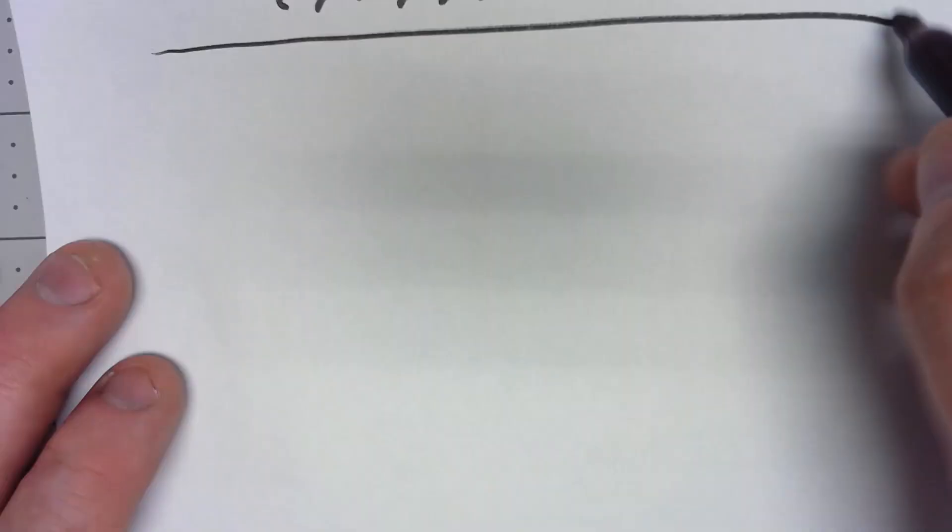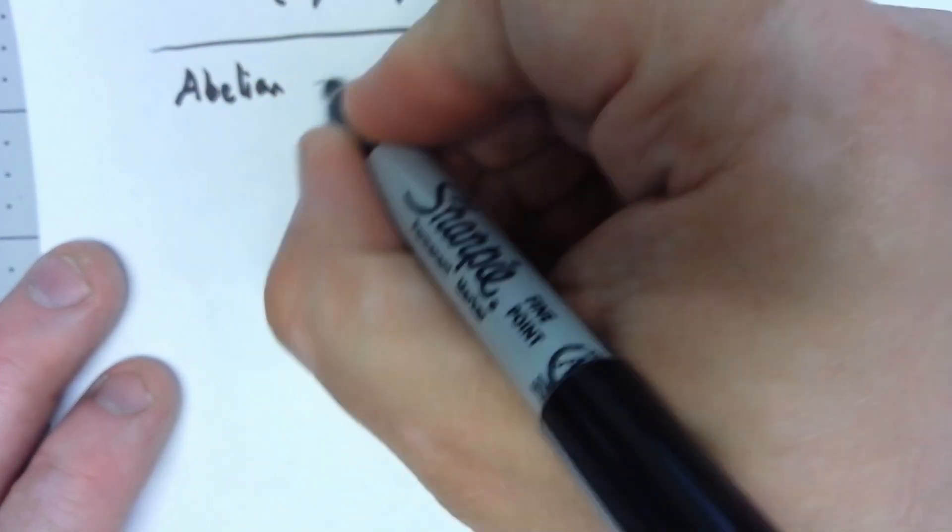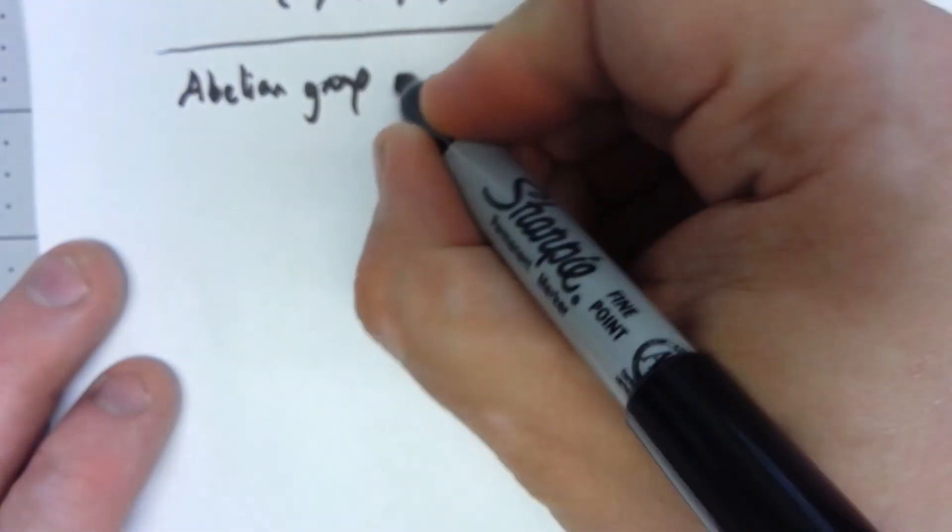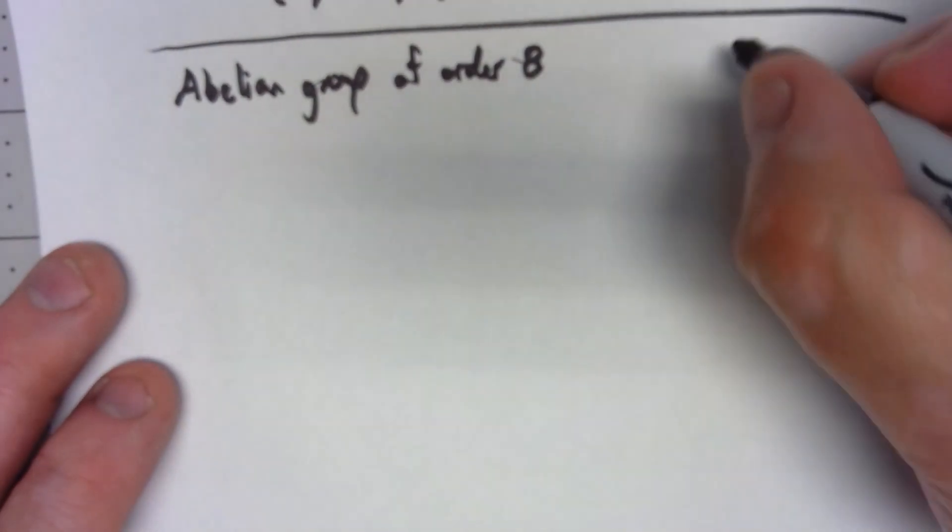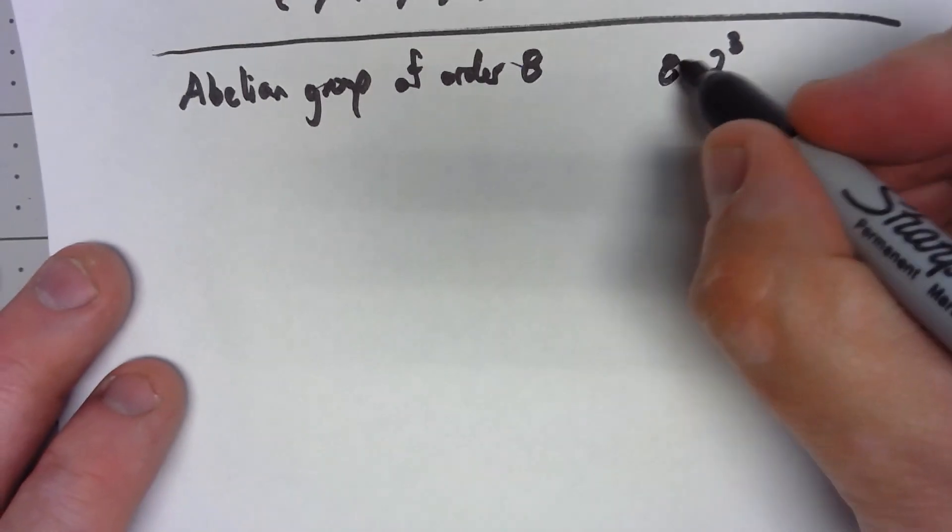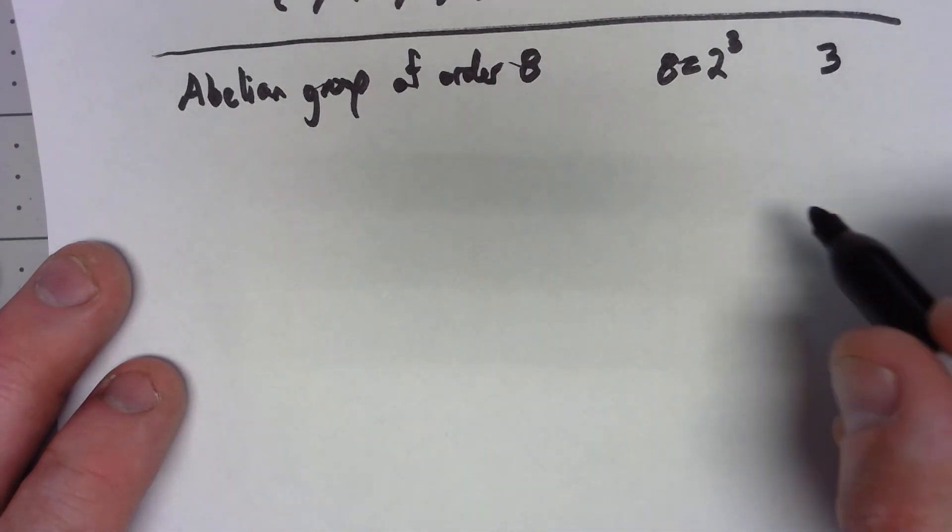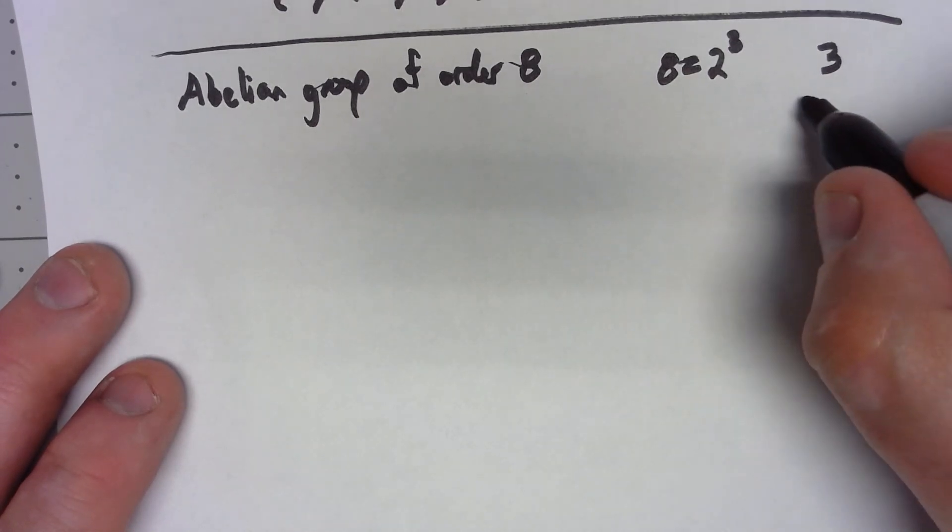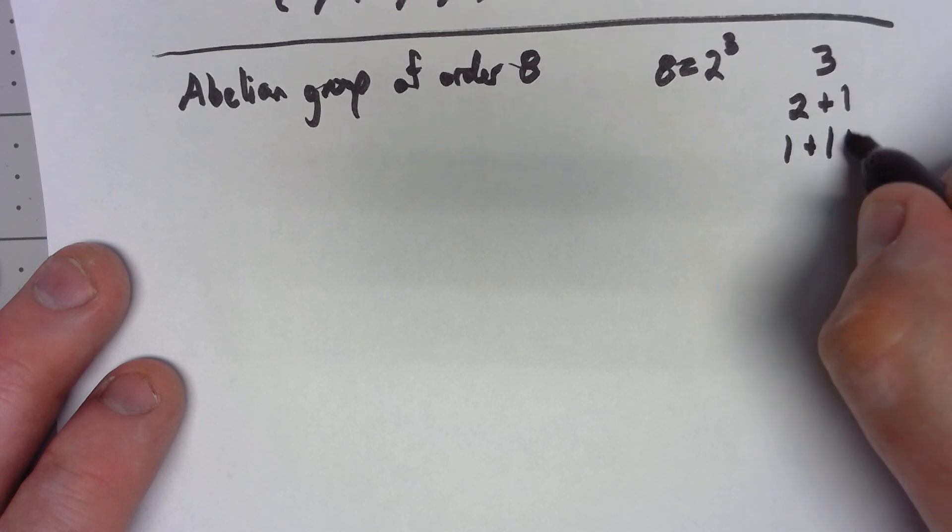So let's take a look here. Let's say we have an abelian group of order 8. Well 8 is 2 cubed. And let's focus on the 3, that power. You can have 3, you can have 2 plus 1, and you can have 1 plus 1 plus 1.